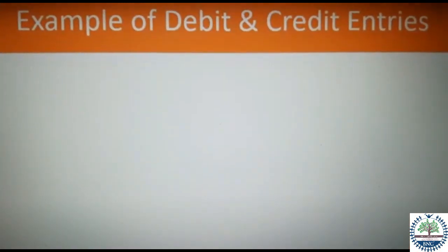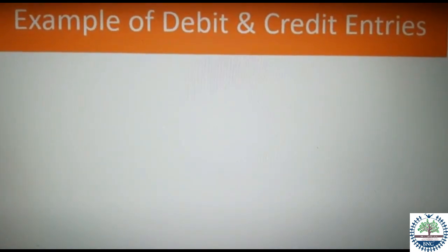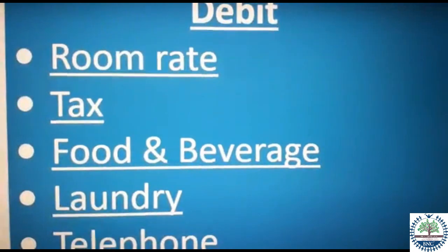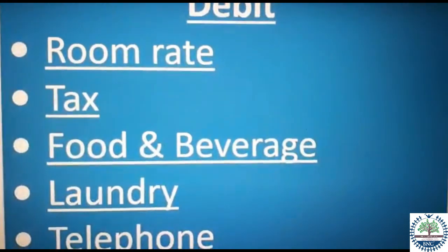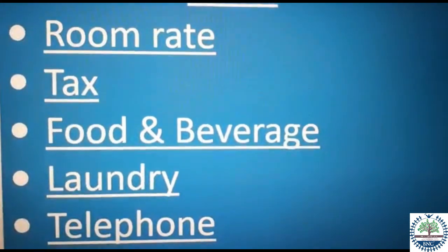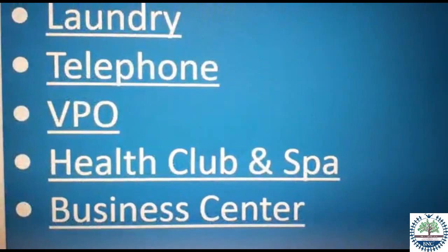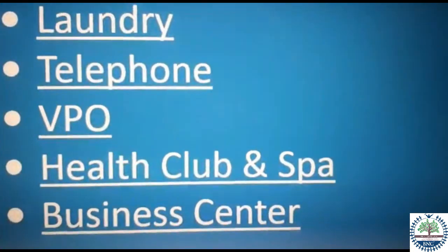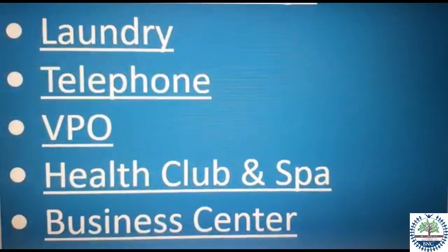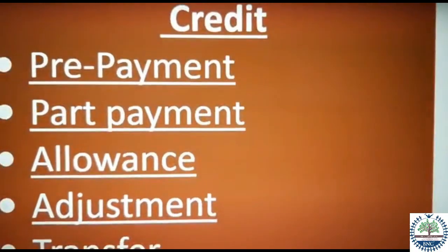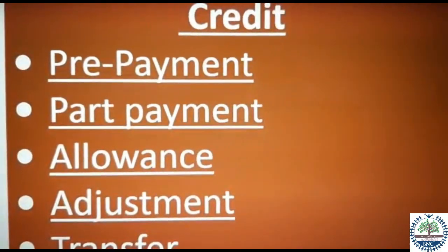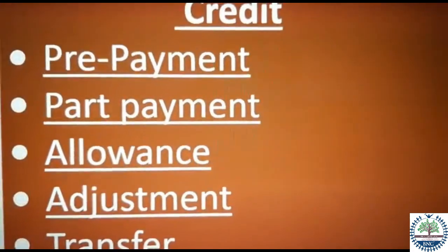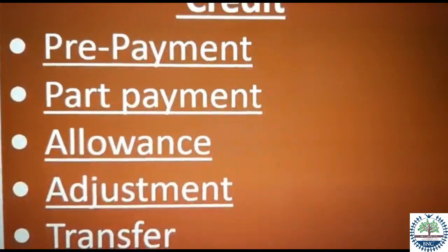Debit entries include room rates, taxes, food and beverage, laundry, telephone, health club, and business center charges. Credit entries include prepayment, part payment, allowances, adjustments, and transfers.